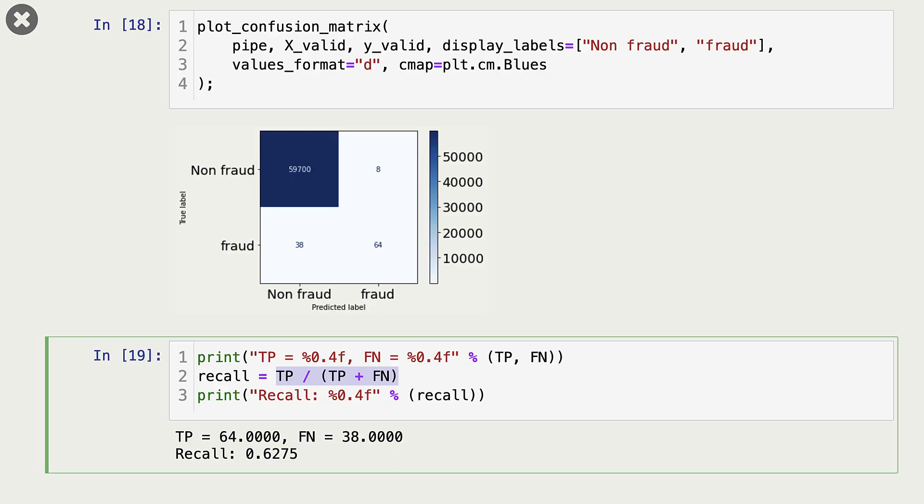So this is interesting, because our accuracy with logistic regression was 0.9991. And when you look at this different metric, recall, we get this recall of 0.6275. So the model is not really doing very well here. It is missing many fraud transactions.